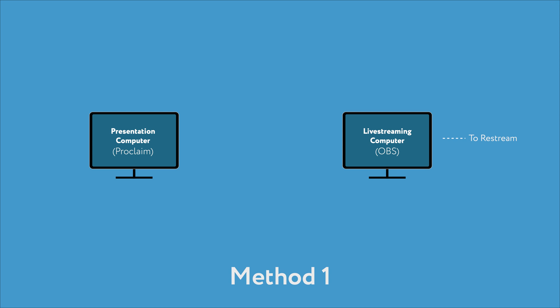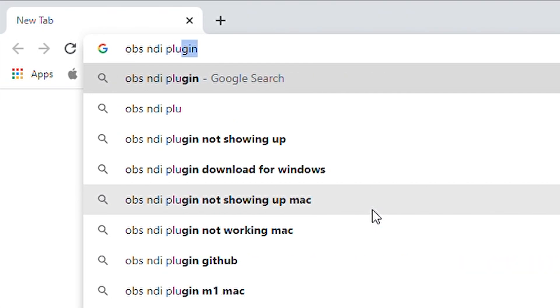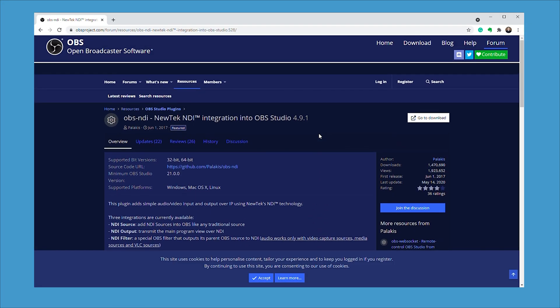On the screen you'll see two computers. We're using a pretty cheap Lenovo laptop as our presentation computer and a Mac Mini as our live streaming computer. I don't think it matters whether you're on a Mac or Windows. For both methods, we're running an HDMI cable from the presentation computer into a splitter, sending it to the main projector and also to our confidence monitor. We're also using OBS for both methods — OBS is free and we are big fans of free stuff. On your live streaming computer, you need to download the OBS NDI plug-in. This is really important.